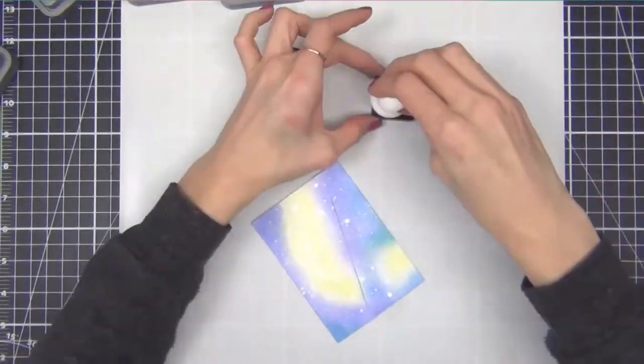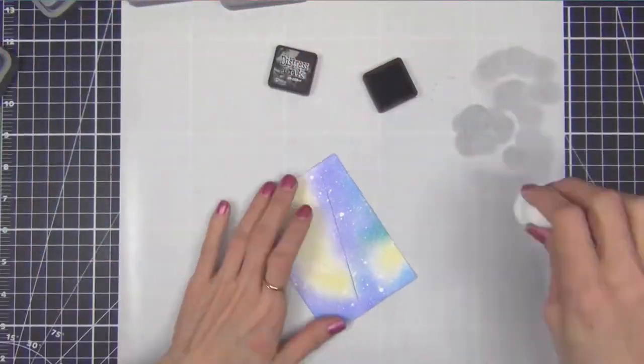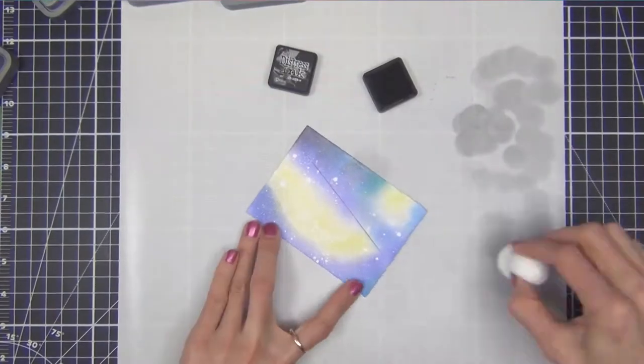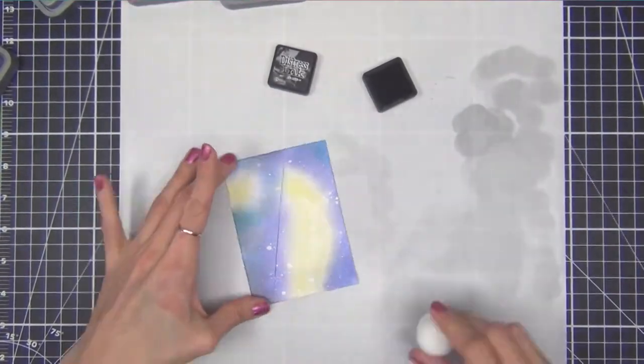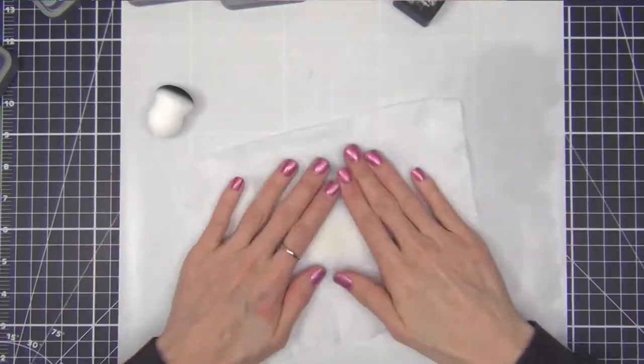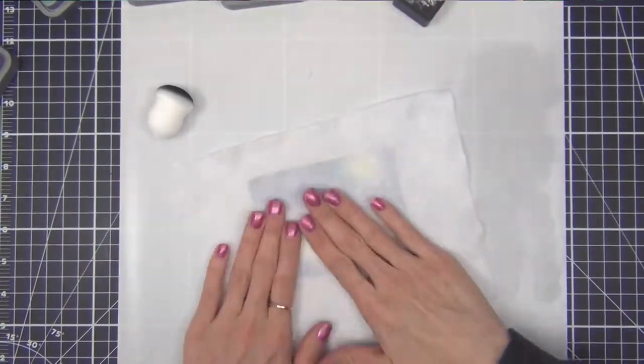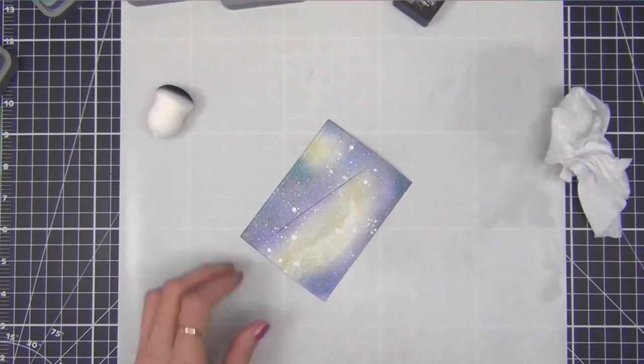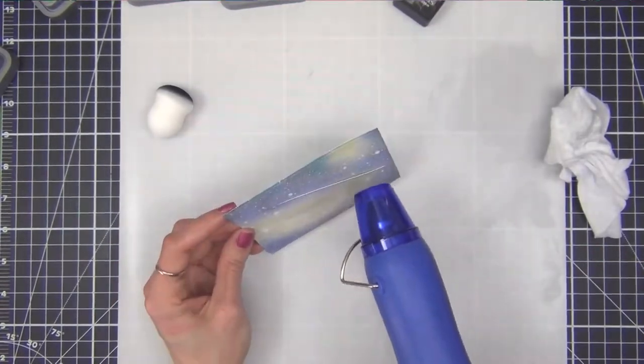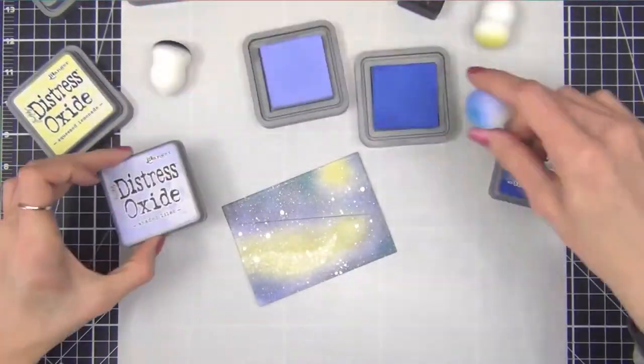And then here is where I think I kind of messed up. I decided to go over it with some black distress ink to darken it up a little bit and I think it just made it a little too dark. So I go ahead and try to lift some of it up with a wet baby wipe and it works a little bit but you can see it really dulled the yellow.